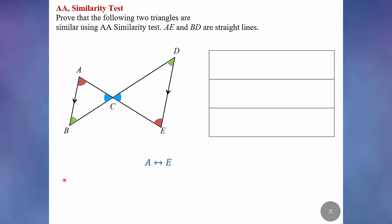In writing the proof, all vertices must match. Vertex A corresponds to vertex E. Vertex B corresponds to vertex D. And vertex C corresponds to vertex C. You can write this down as a side working.